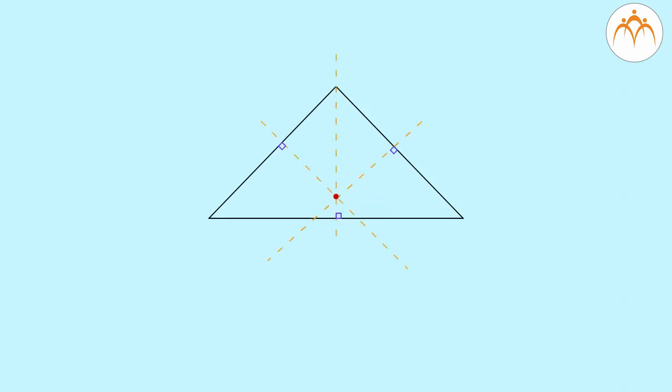A similar property for perpendicular bisectors of sides of the triangle. They all intersect at a point called circum-centre, and keeping circum-centre as centre, a circle can be drawn passing through all three vertices of the triangle.